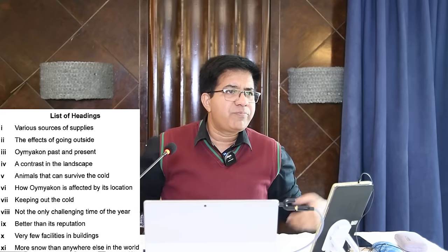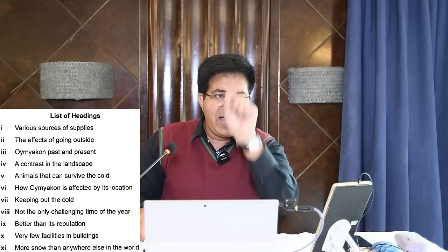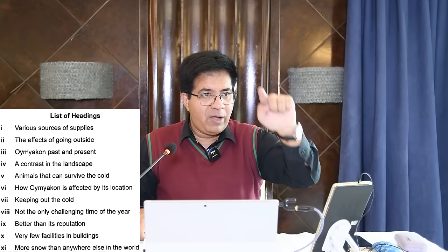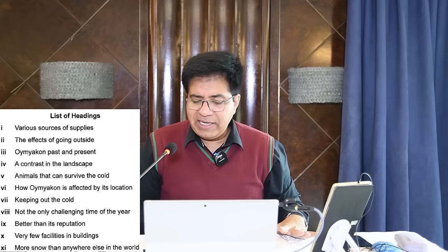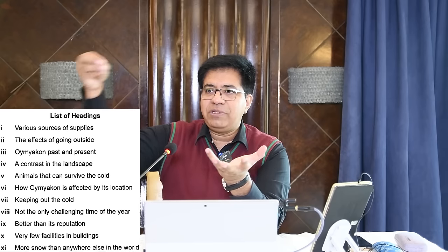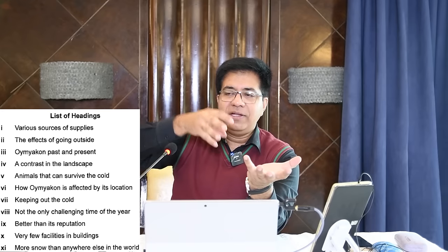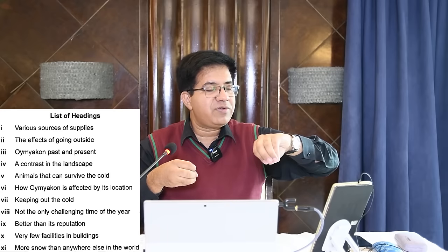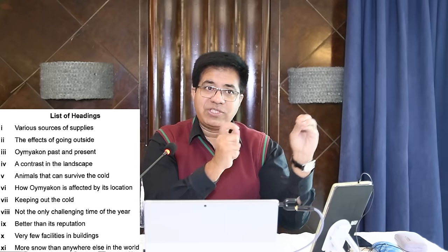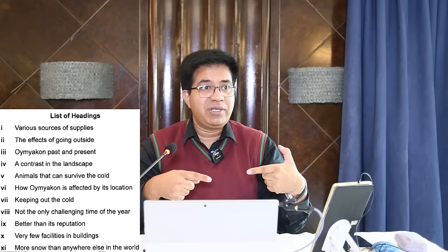If you take the computer-delivered IELTS you can drag and drop — no problem at all. Now, heading number one: 'Various Sources of Supplies.' In one paragraph they will say they get meat from this source, wheat from there, biscuits from there, water from there, electricity from there — what is it? Various sources of supply. This is what I call interpretation. If you're looking for 'various sources of supply' in a heading about 'effects of going outside,' you will never find it.